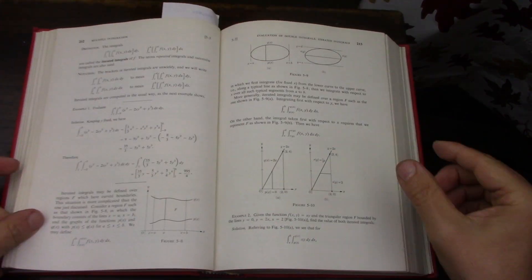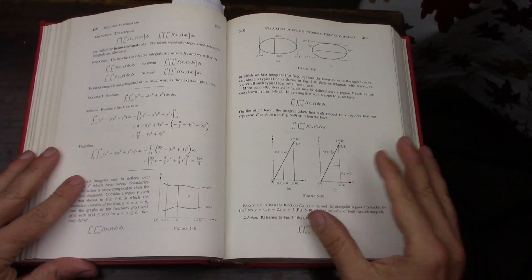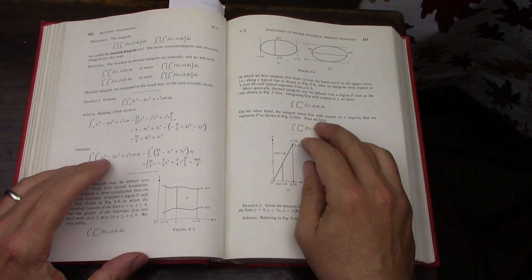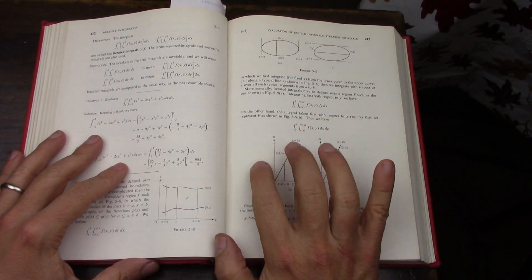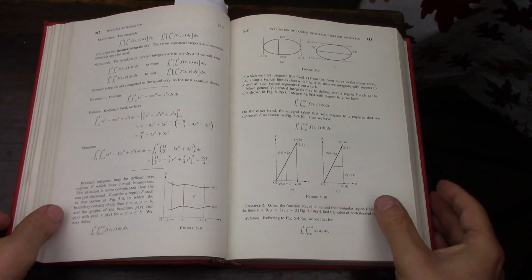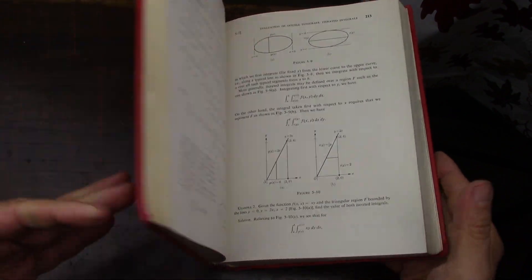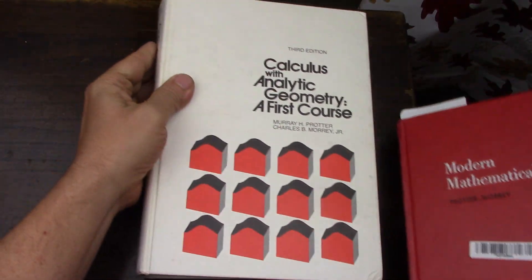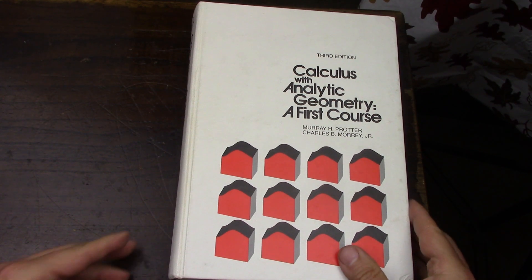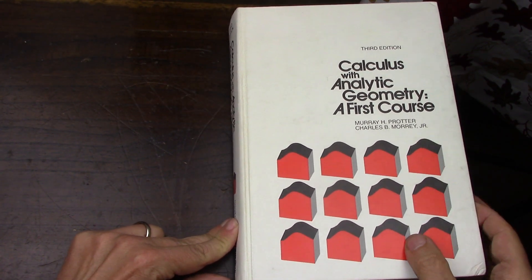But then in this book, Protter and Morrey keep mentioning the first course, and they say this topic is also treated in the first course, and they mention in the beginning of the book that you can also just use any calculus book. But because I like collecting, I did get the so-called first course. It's just a calculus book, a very good one, and it's got a ton of content. This particular copy is brand new.